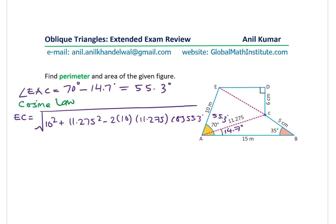Let's find this value. So it is 10 square plus 11.275 square, minus 2 times 10 times 11.275 times cos of 55.3 degrees. And we'll square root our answer, which gives us the value of EC as 9.94. So we have EC as 9.94.